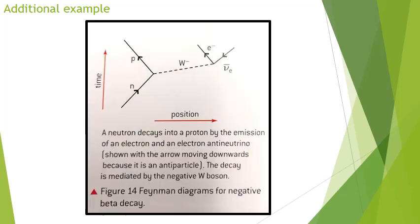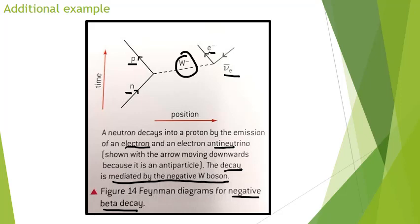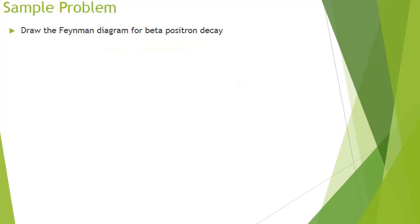Let's look at negative beta decay. Here's our neutron — that neutron becomes a proton, and at the same time there's an emission of an electron and an anti-neutrino. The decay is mediated by a negative W boson, which we see in the middle. We've talked about how the W bosons affect the weak nuclear force and therefore this decay. Now, try to draw the Feynman diagram for beta positron decay — pause the clip and give it a try.